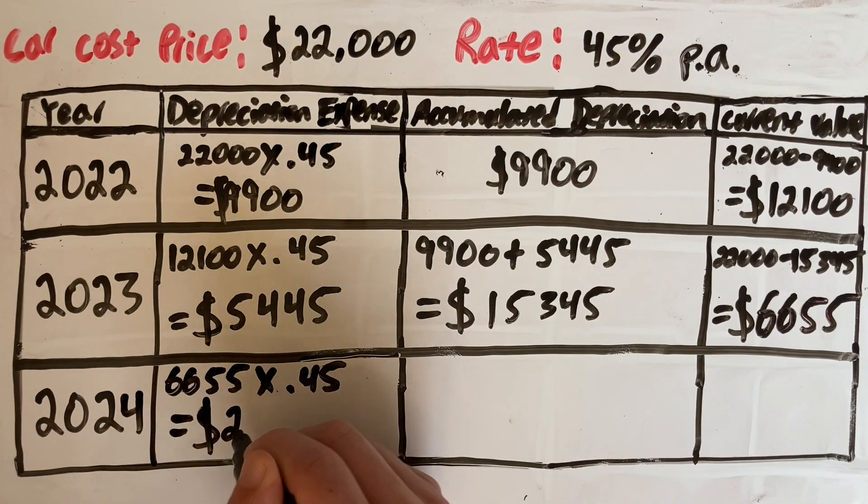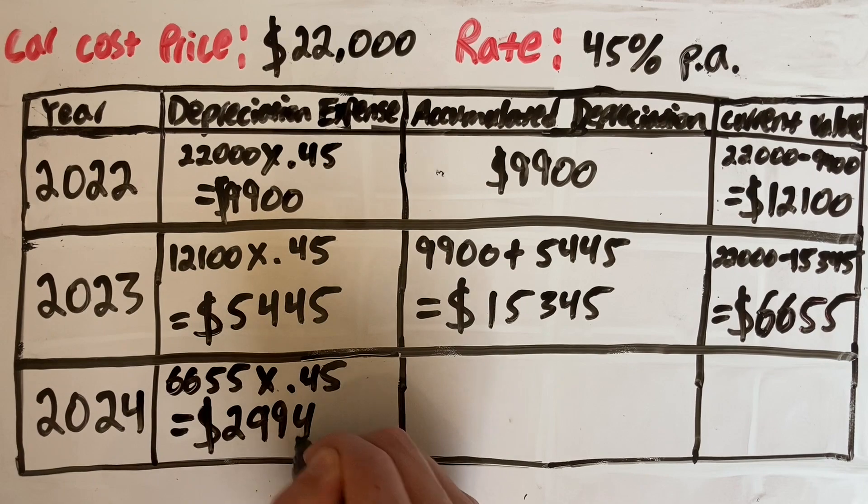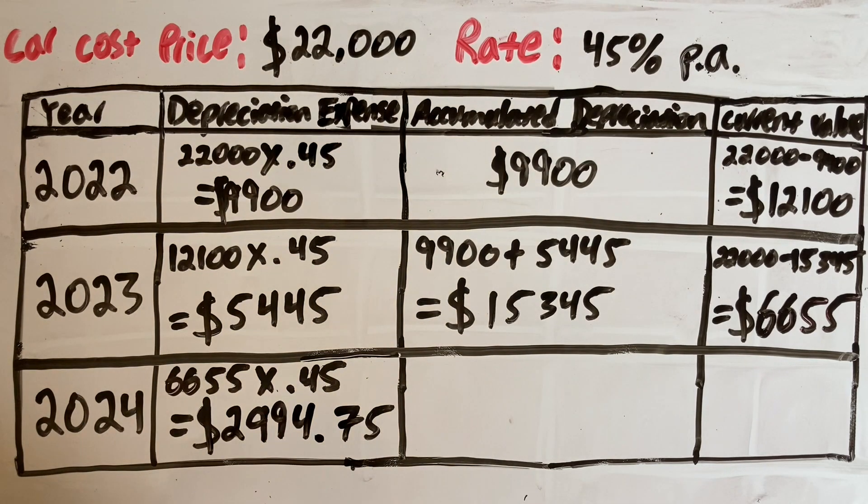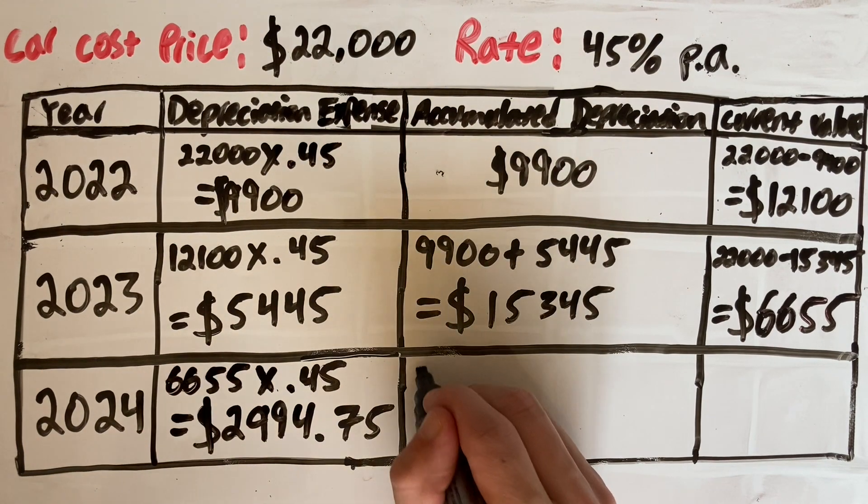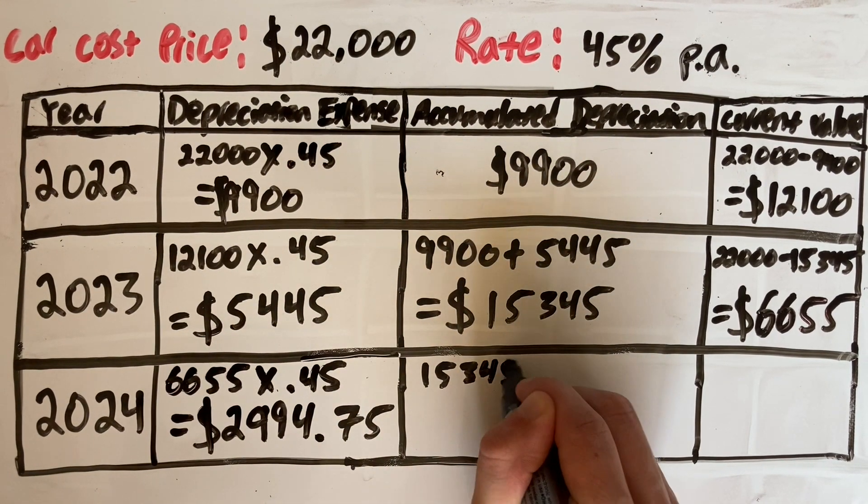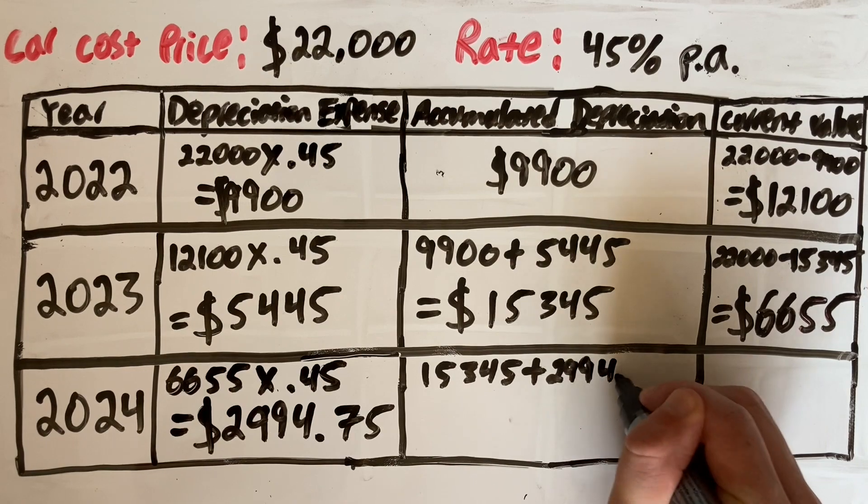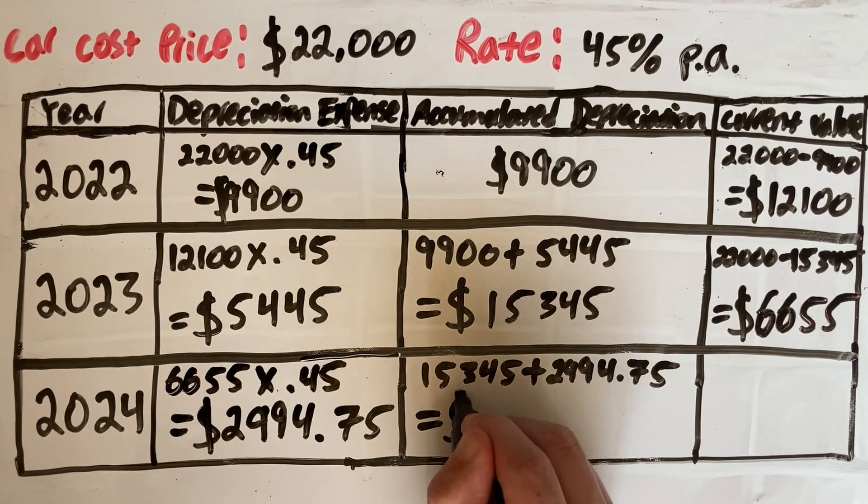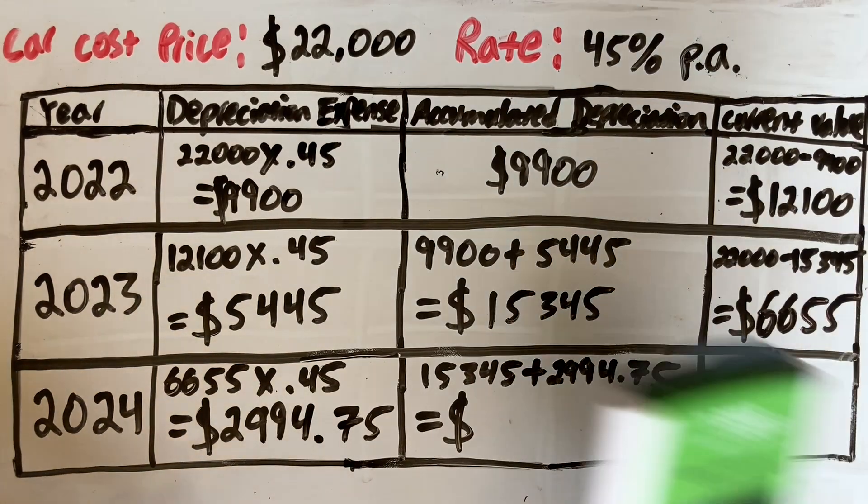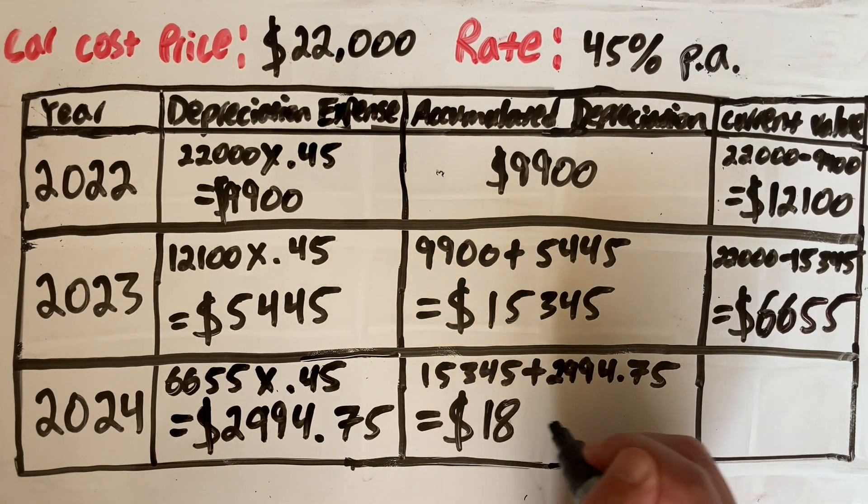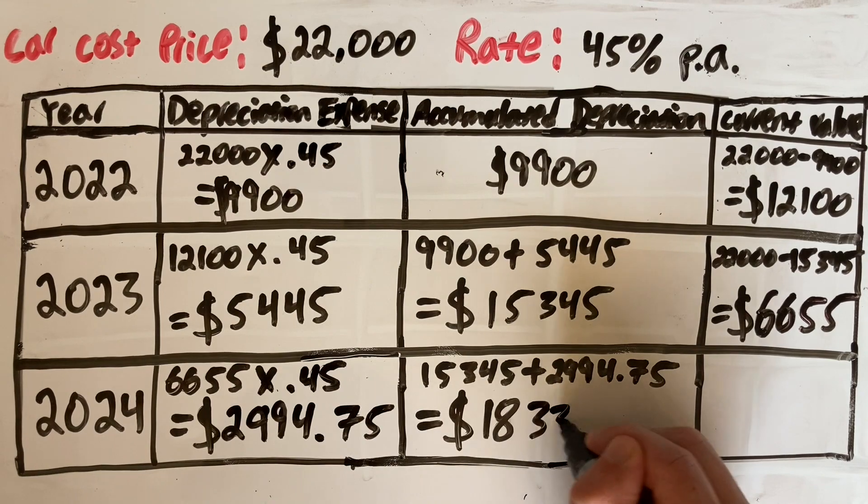For this case, it has not gotten more than two. That gives us $2,994.75. The reason it's usually two decimal places is just because it's to the nearest cent. Let's get our accumulated depreciation. We can take the total that we worked out in our last year and just add the depreciation expense from this year. So $15,345 plus $2,994.75. That's going to give us our total accumulated depreciation over the three years to be $18,339.75.